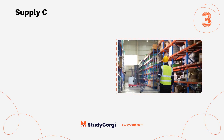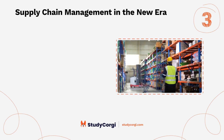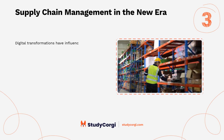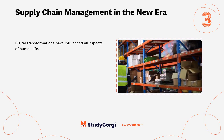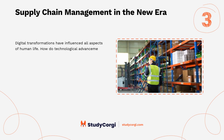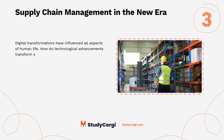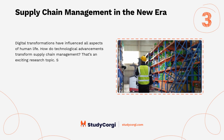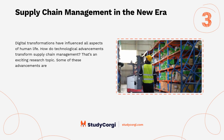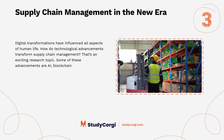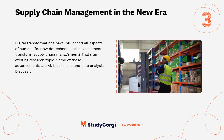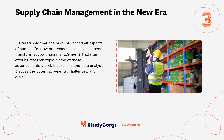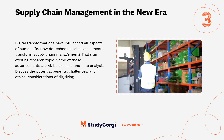Supply chain management in the new era. Digital transformations have influenced all aspects of human life. How do technological advancements transform supply chain management? That's an exciting research topic. Some of these advancements are AI, blockchain, and data analysis. Discuss the potential benefits, challenges, and ethical considerations of digitizing the supply chain.